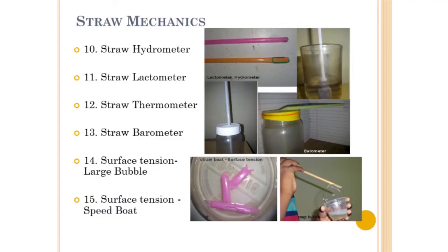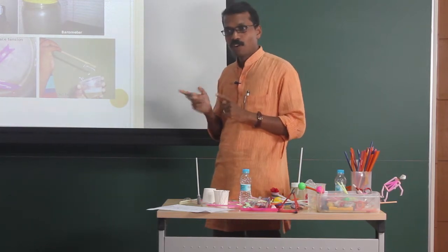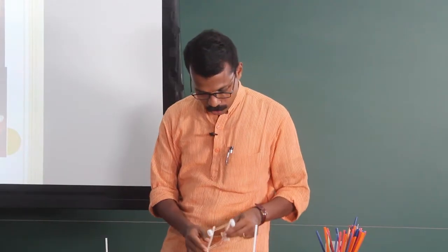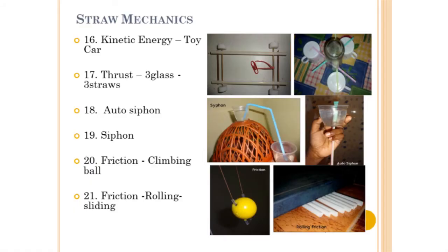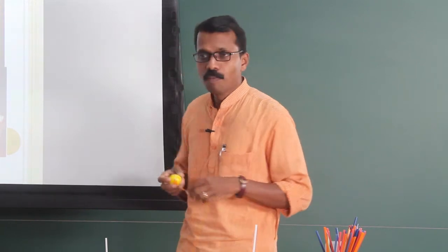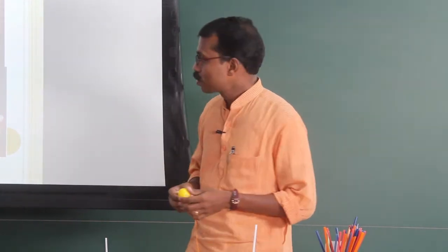Next is surface tension — we can create different types of soap bubbles, and the size depends on how the straw is cut. There are straw boards: a straw cut and stopped at the back will glide just like a board. Then kinetic and potential energy: there is a toy cart to demonstrate conversion between potential and kinetic energy. Thrust can be shown using three straws to hold a glass. There is also an ordinary siphon and auto siphon, a climbing ball shown with two straws and a thread, and rolling friction demonstrated with a set of straws — rolling friction reduces sliding friction.